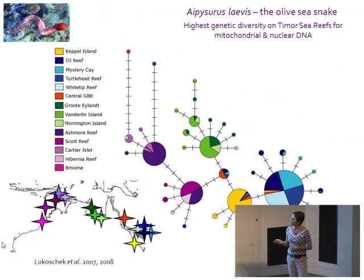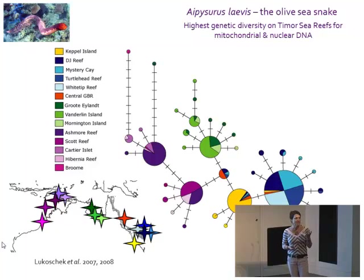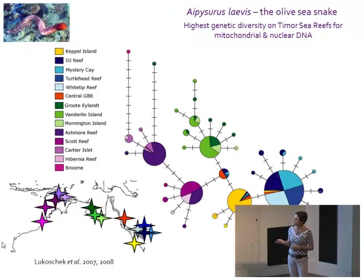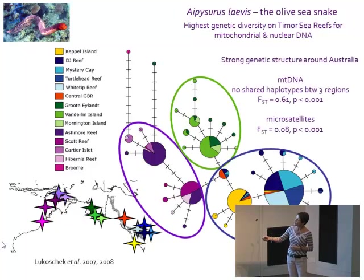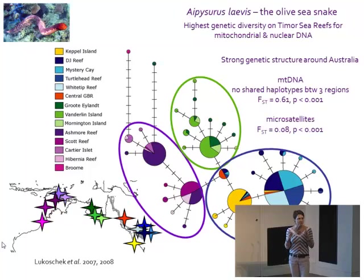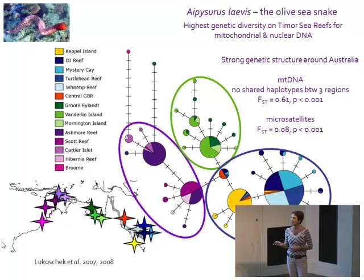Focusing on intraspecific genetic diversity of the olive sea snake, this haplotype network shows the relationship among individuals. All you really need to get out of this is that the Timor Sea reefs, in purple, have much higher genetic diversity than the Gulf of Carpentaria or the Great Barrier Reef. There's really strong population genetic structure — very little gene flow on this large regional scale. And this is also true for nuclear microsatellites.